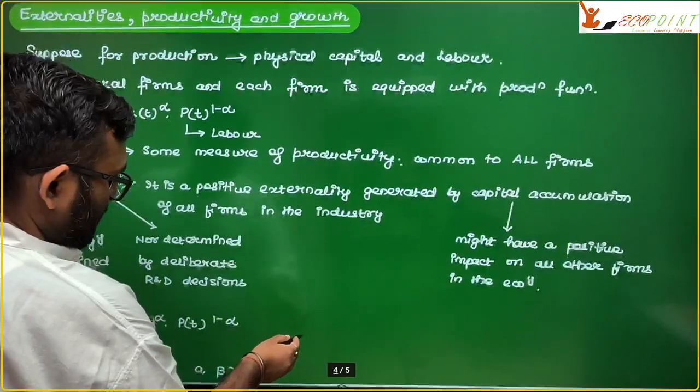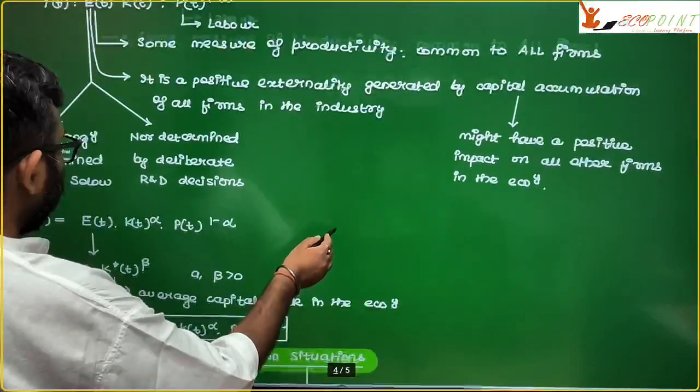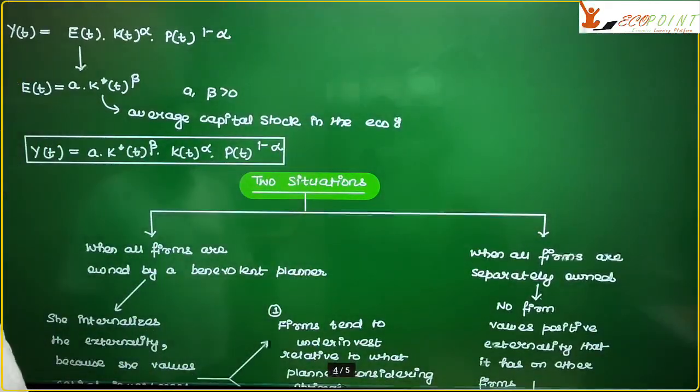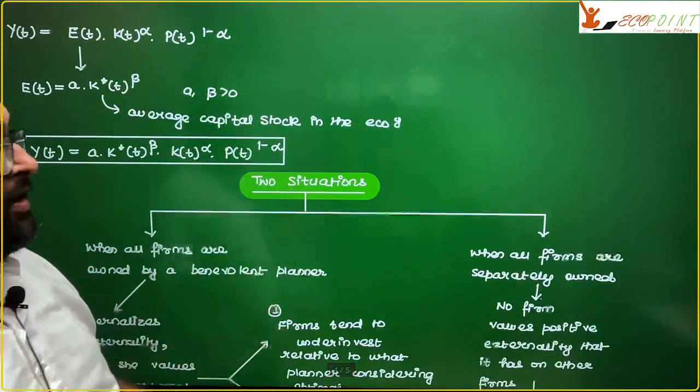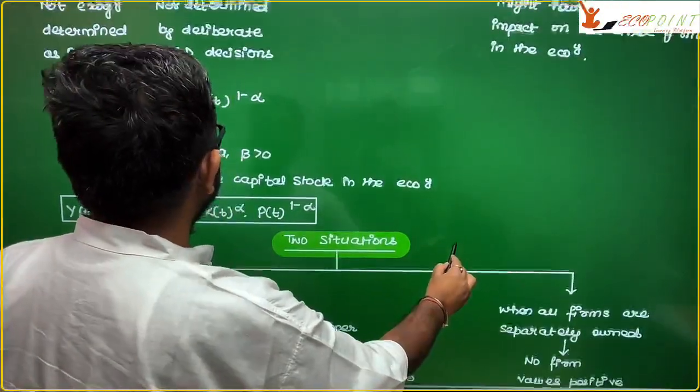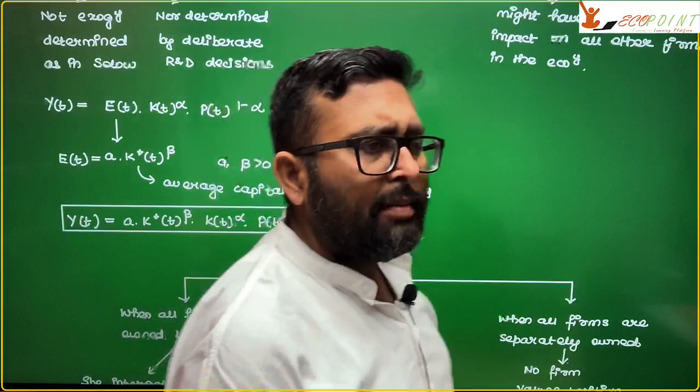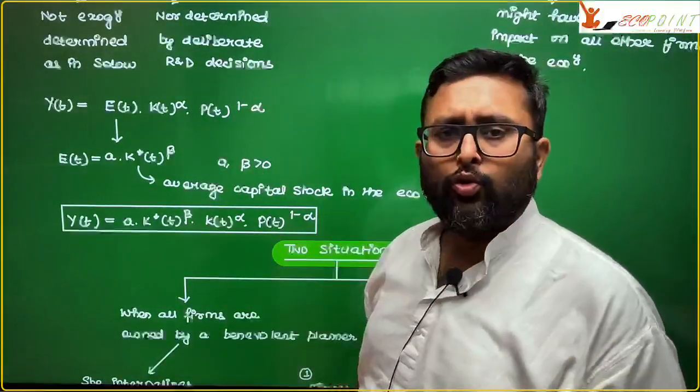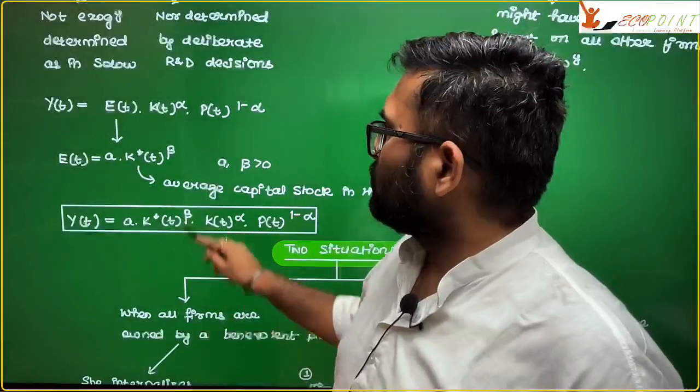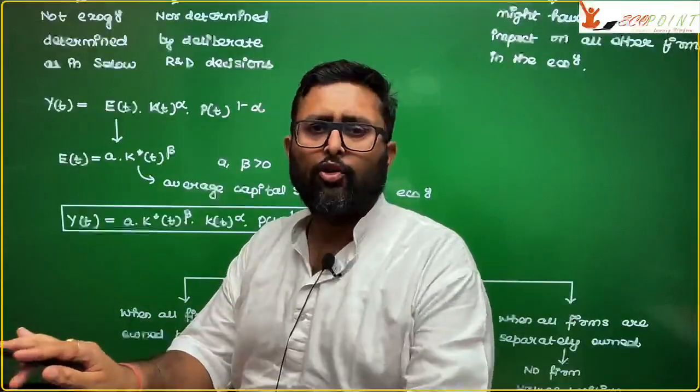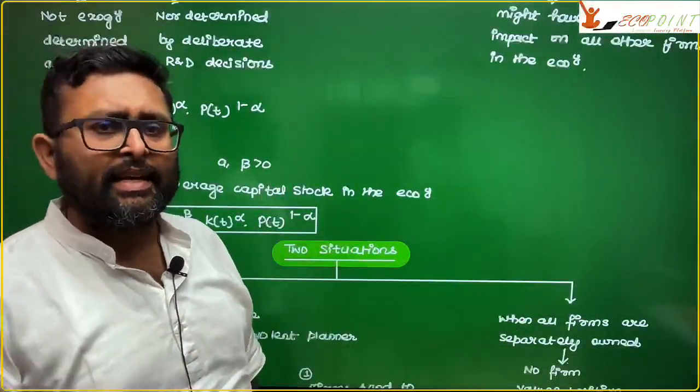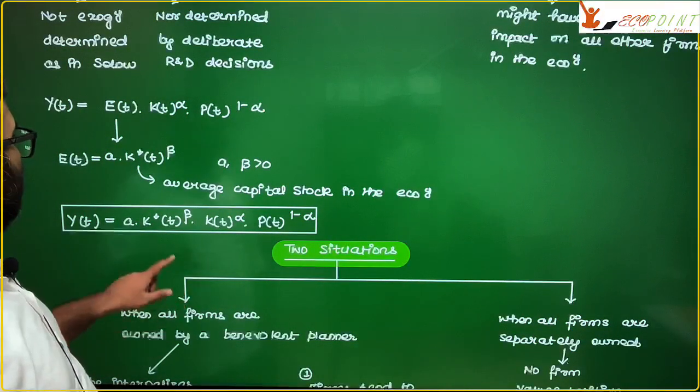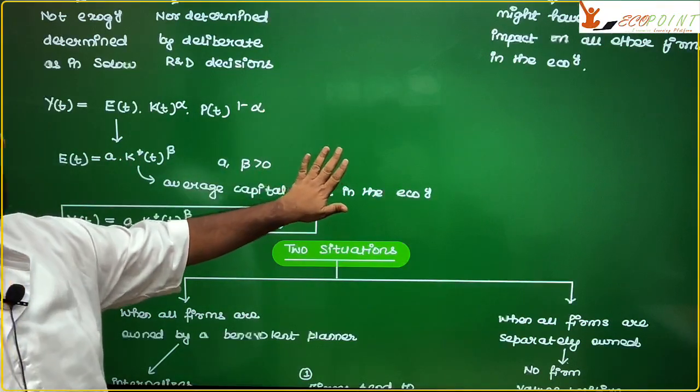We'll go one step ahead. And we say that this y_t is equal to e_t, k_t to the power alpha, p_t to the power 1 minus alpha. And you can see, if I put k_t and p_t both lambda by lambda, so this will be alpha plus 1 minus alpha. It will be the order of lambda to the power of 1. And this will be a CRS production function.